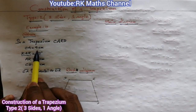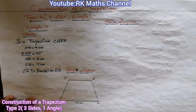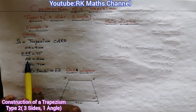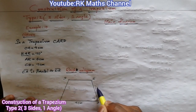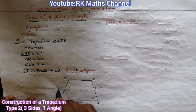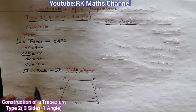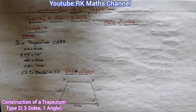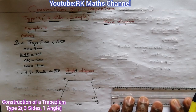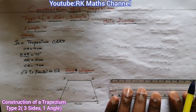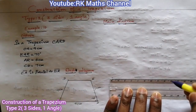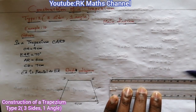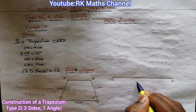Let's begin. CA is 9 cm, so we draw the base line CA equal to 9 cm. Mark point C at zero, measure 9 cm, and mark point A. Join them together. CA is equal to 9 cm — the base line is done.